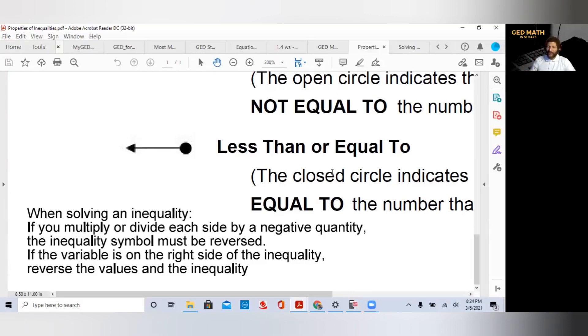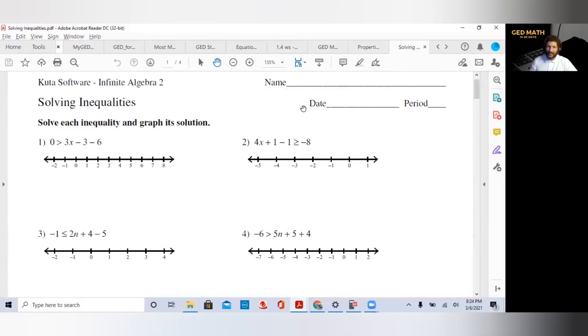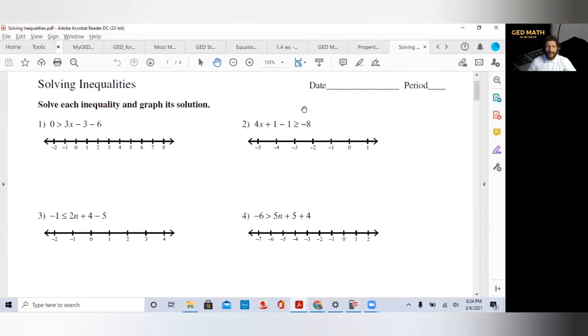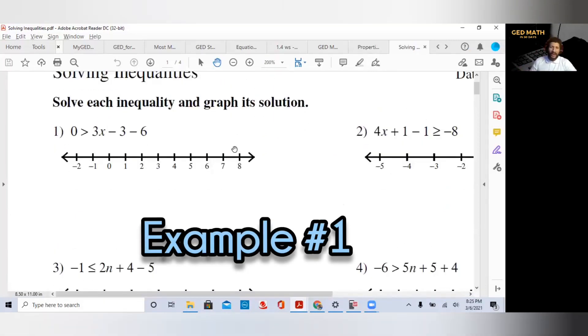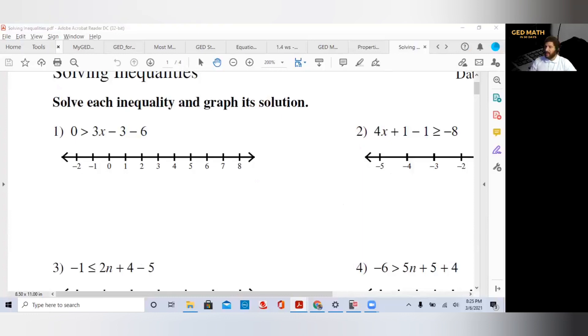Let's get started with some practice problems. We're going to try number one. This is the inequality: zero is greater than 3x minus 3 minus 6. First, you must combine like terms. So you should have zero is greater than 3x minus 9.